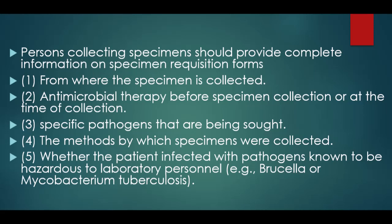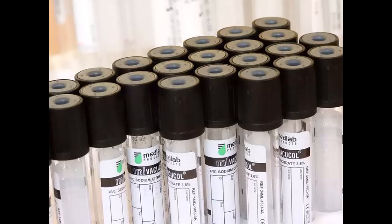Persons collecting specimens should provide complete information on specimen requisition forms: from where the specimen is collected; whether the patient was receiving antimicrobial therapy before or at the time specimens were collected; specific pathogens that are being sought; the method by which specimens were collected; and whether the patient may be infected with pathogens known to be hazardous to lab personnel. Such information is necessary to ensure that specimens are processed promptly, that appropriate cultures are performed, and that test processing is appropriate for the method of specimen collection.